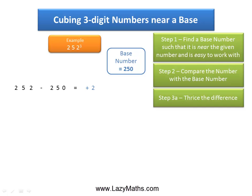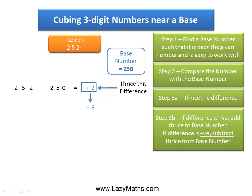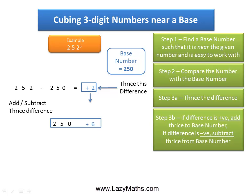The next step is to thrice the difference. In this case, the difference is positive 2, so thrice of this difference is equal to positive 6. And then, we add the base number 250 with the thrice of the difference, and we get 256.